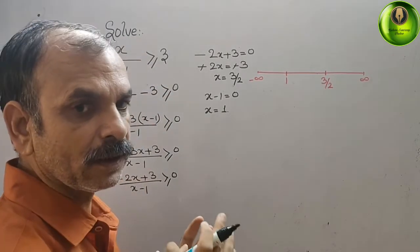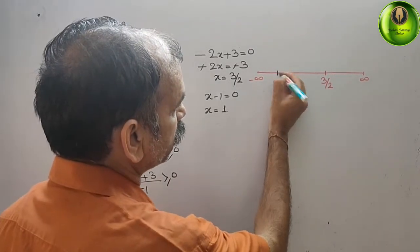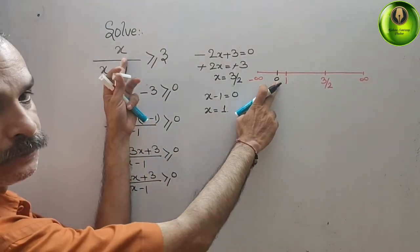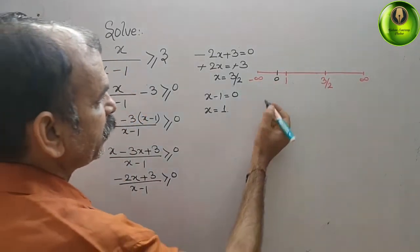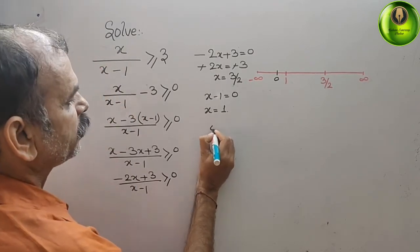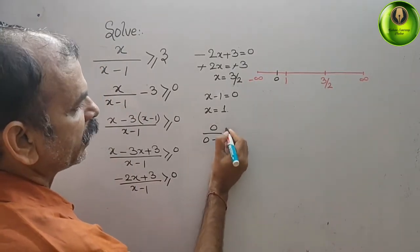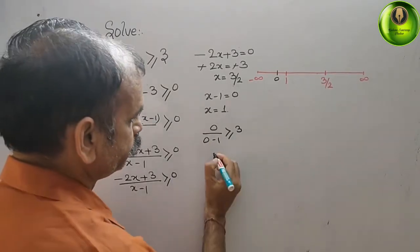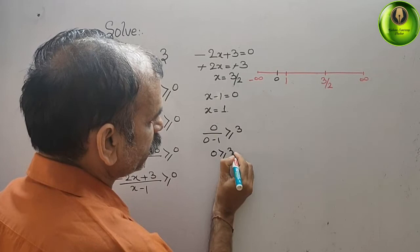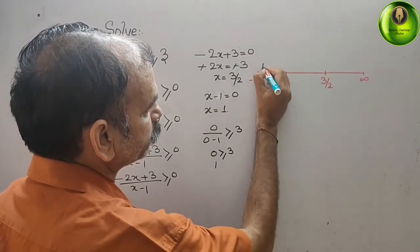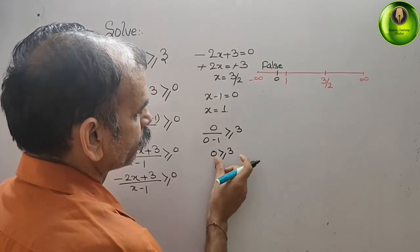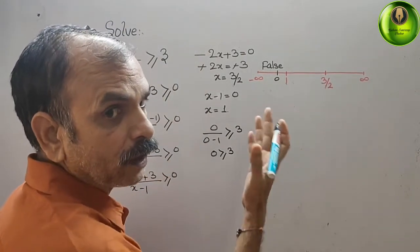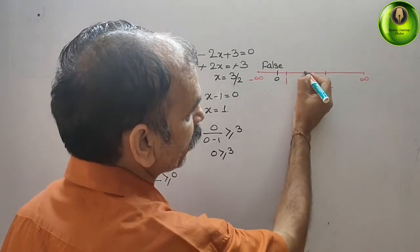We take one test point from each sector. In the first sector (x < 1), we take x = 0. Substituting into the original inequality: 0/(0-1) ≥ 3 gives 0 ≥ 3, which is false. So we mark this sector as false.